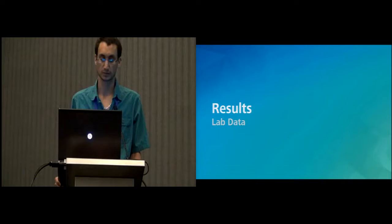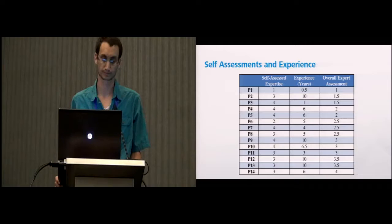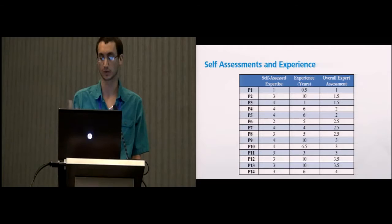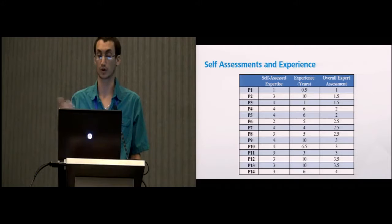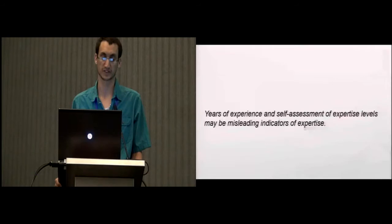Let's move on to results. First we'll talk about results captured in the lab, then how they correlate with what we captured in-situ. This is a table showing the level of expertise collected both by the experts and through self-assessment. The second column is how many years each participant recorded having experience. We reordered the participant numbers in increasing sort order from their overall expert assessment. You can see already that it doesn't necessarily correlate with either years of experience or self-assessed expertise. Right away we see that years of experience and self-assessment may be misleading indicators of expertise.